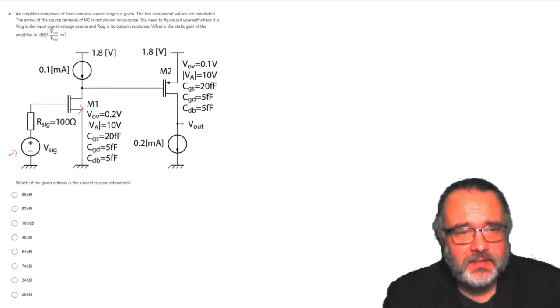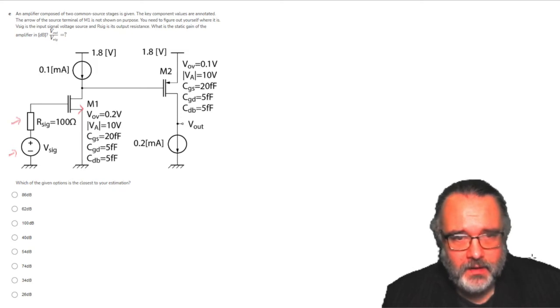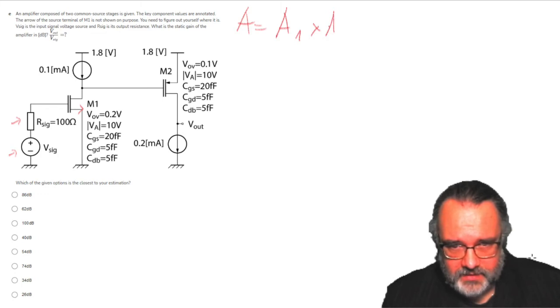This signal is the input signal voltage source and R-sig is its output resistance. What is the static gain of the amplifier V-out divided by V-sig? We have two stages. Hence the gain will be the first stage times the second stage. So the total gain will be the gain of the first stage times the gain of the second stage.